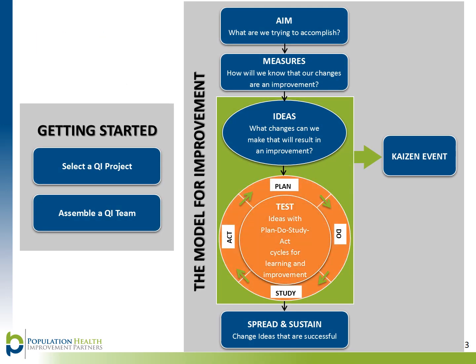Once your team has established the aim of your project, determined how you will measure improvements, and identified specific changes you want to make, the next step is to test the changes using the Plan, Do, Study, Act cycle, or PDSA cycle. The PDSA cycle allows your team to plan how you will test a change, try the change on a small scale, make observations about the results, and take action based on what was learned by adapting, adopting, or abandoning a change.